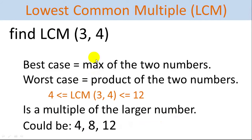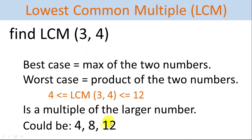In this case it could be 4, 8, or 12 — only three checks. We get all the multiples of the higher of the two numbers: 4, 8, and 12. We check if each is divisible by 3, starting from the smallest. Is 4 divisible by 3? No. Is 8 divisible by 3? No. Is 12 divisible by 3? Yes. So 12 is our lowest common multiple.